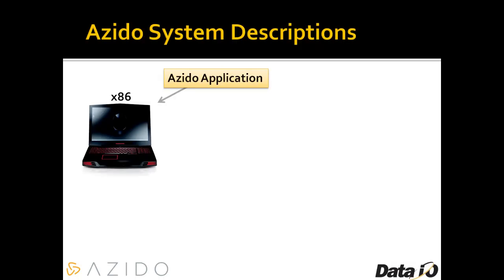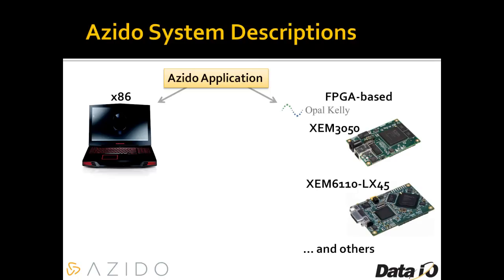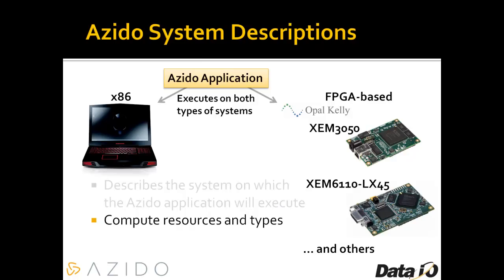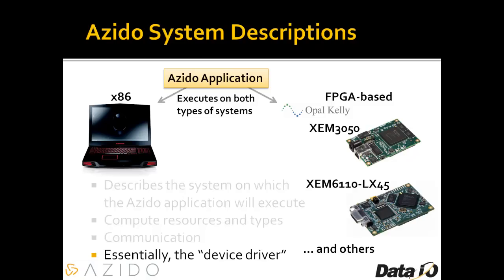Another key aspect of Azito is that an application can work in multiple environments. When developing your application, you may stay entirely within an x86-based system. This gives you a rapid development environment where you can create your algorithm, test it, and verify it before porting to your ultimate destination. The ultimate destination might be an FPGA-based system — here are two examples from a company called Opal Kelly. The same Azito application executes on both types of systems through something called a system description, which describes the environment, available resources, and communication between chips and back to the Azito development environment. These system descriptions are essentially the device driver behind the Azito technology.